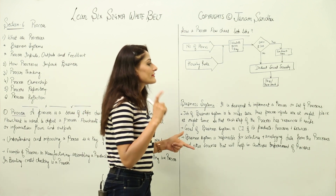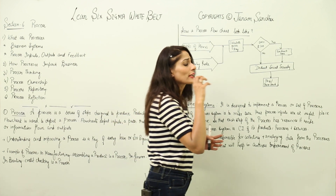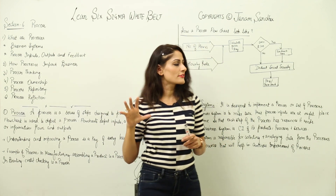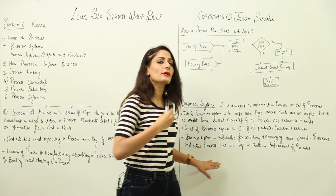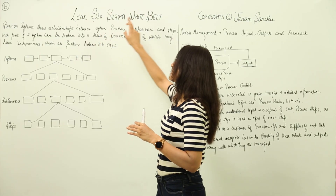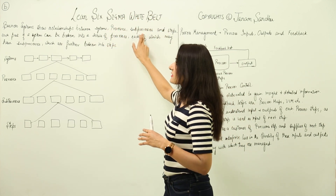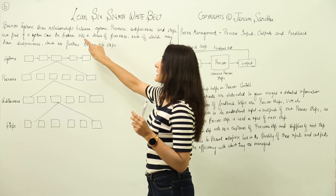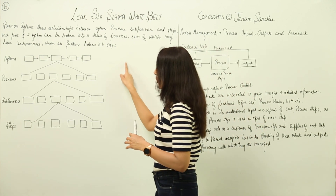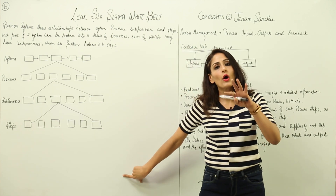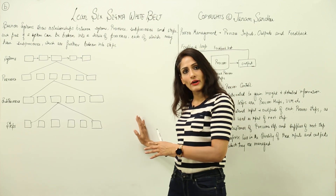A business system is responsible for collecting and analyzing data from the processes, so they can analyze how the processes are working. This data is further used — along with other sources — to help in the continuous improvement of processes, systems, and sub-processes. Each part of the system can be broken into a series of processes, sub-processes, and steps. This is your formal introduction to how value stream maps and process maps are created — this is the building block, the ABC.